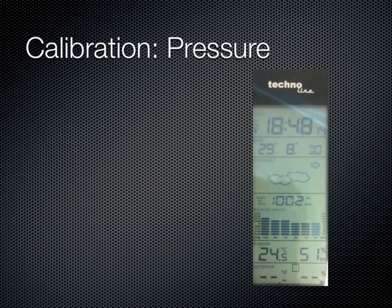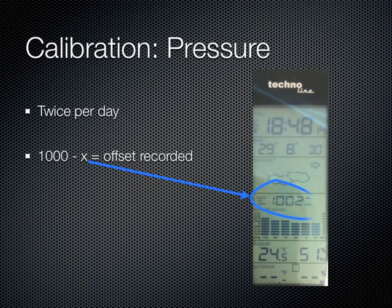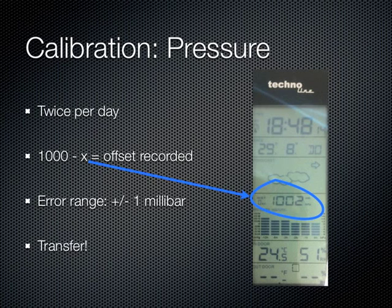Unless the altitude of the room changes, the pressure in the room will not change very much. Therefore, we only calibrate the pressure once in the morning and once in the afternoon. The default setting for the test is 1000 millibars. The number recorded in the calibration log, however, is the offset from this number. Once the measurement is taken, we check the pressure reading to ensure that it is within the acceptable error range of plus or minus 1 millibar. We then transfer the offset number to the calibration log.